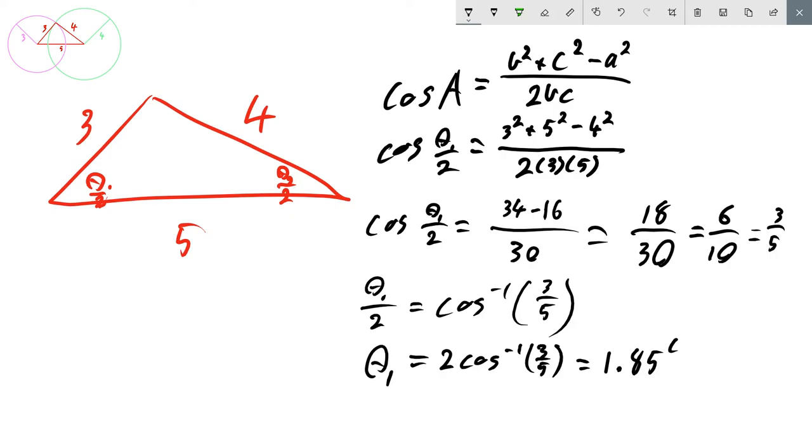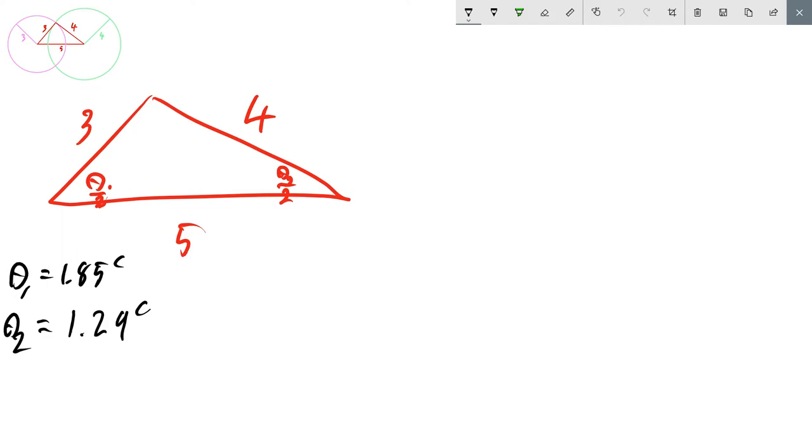So that's our θ₁. So off screen I've did the exact same process and found that θ₂ is equal to 1.29 radians, so you didn't have to sit through me going through the cosine rule again.